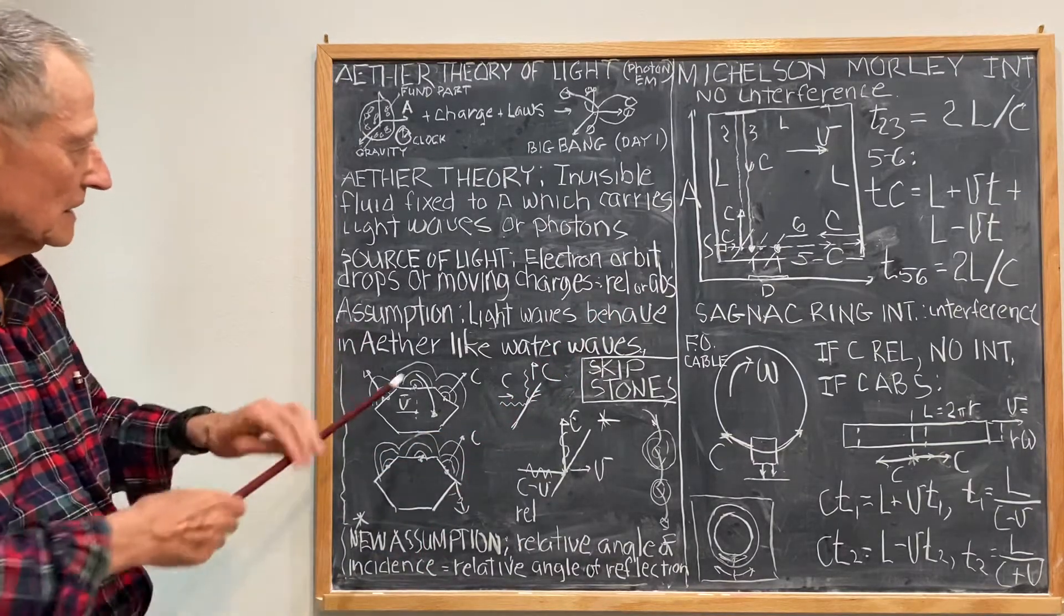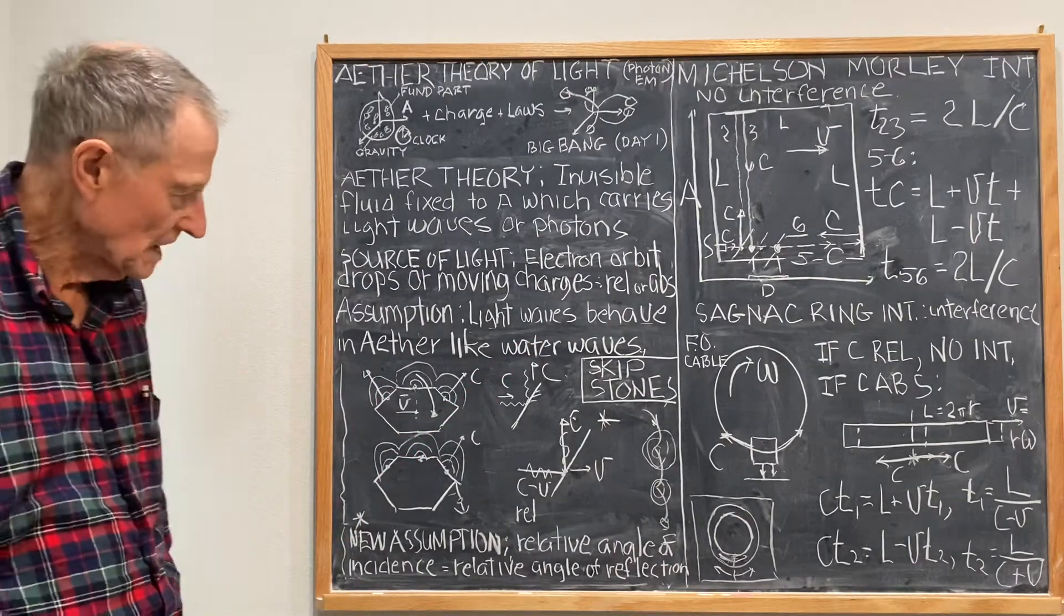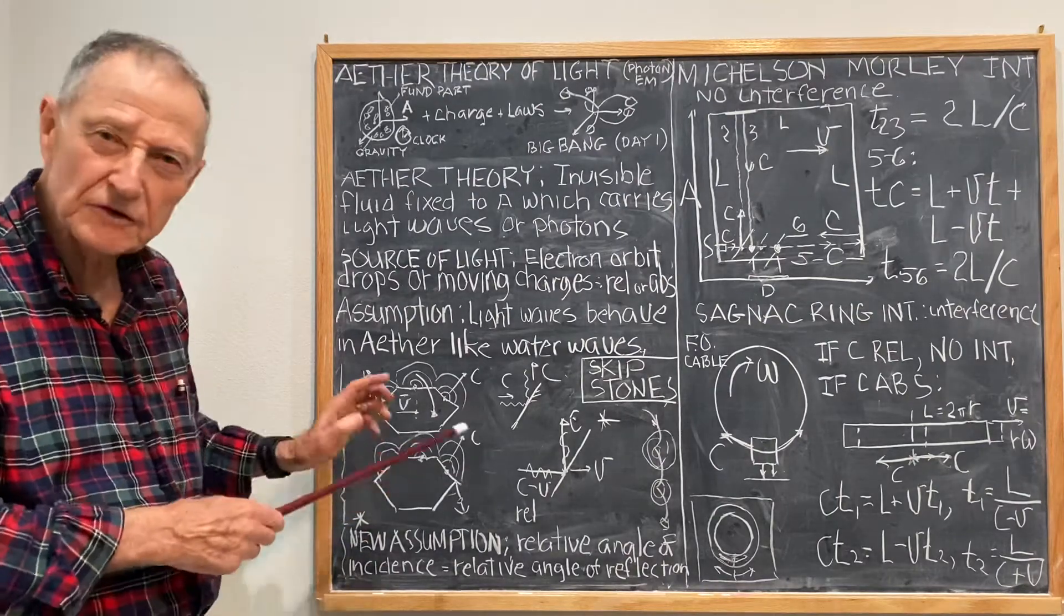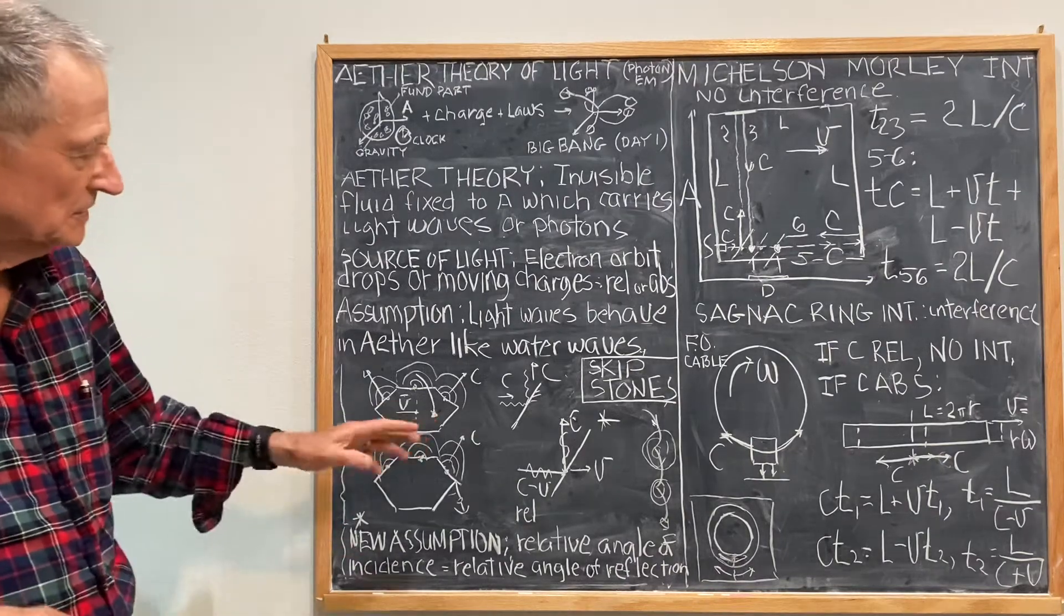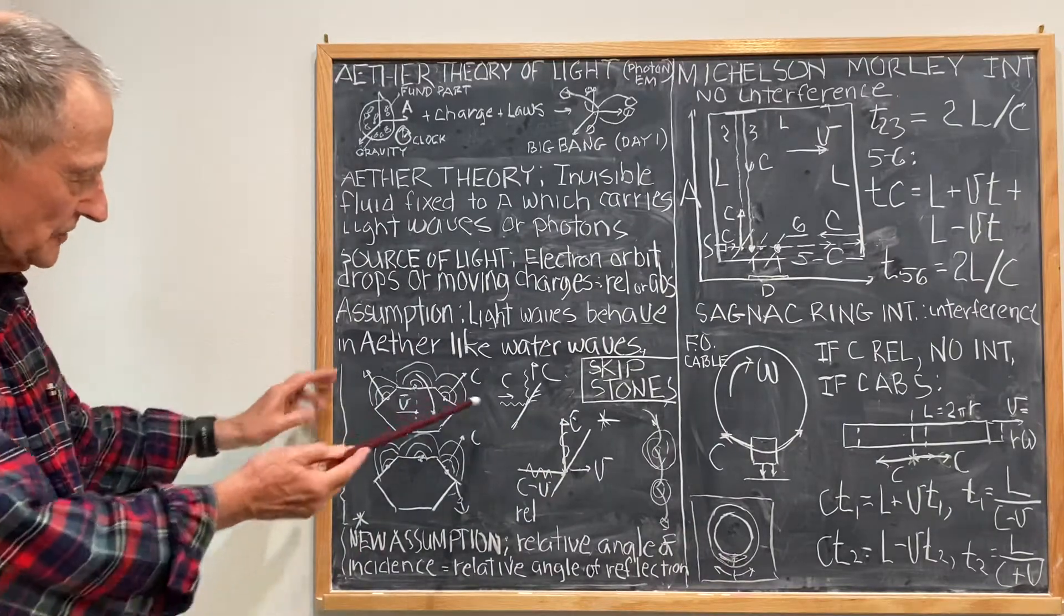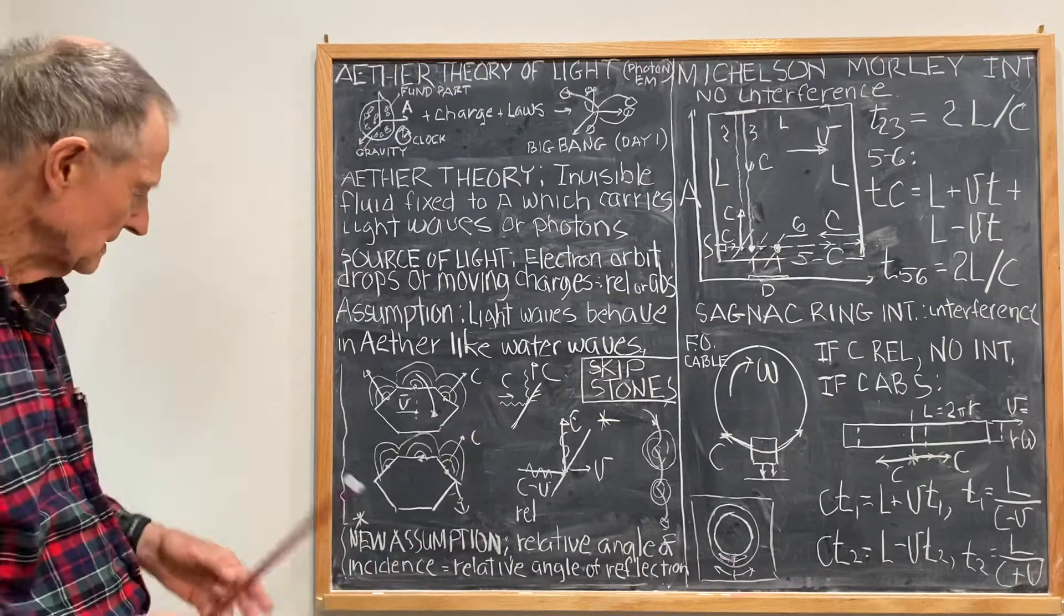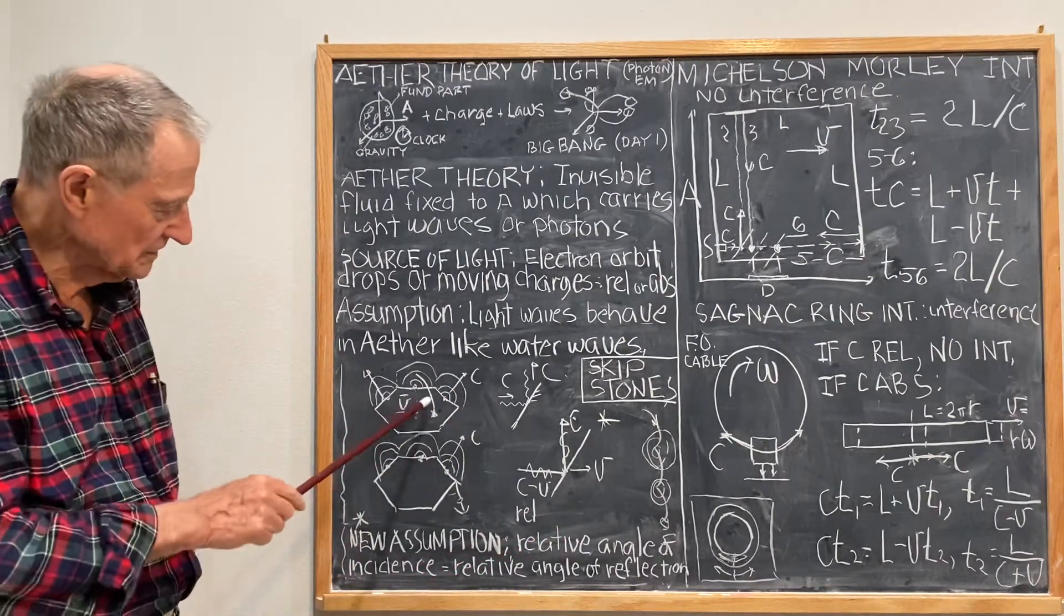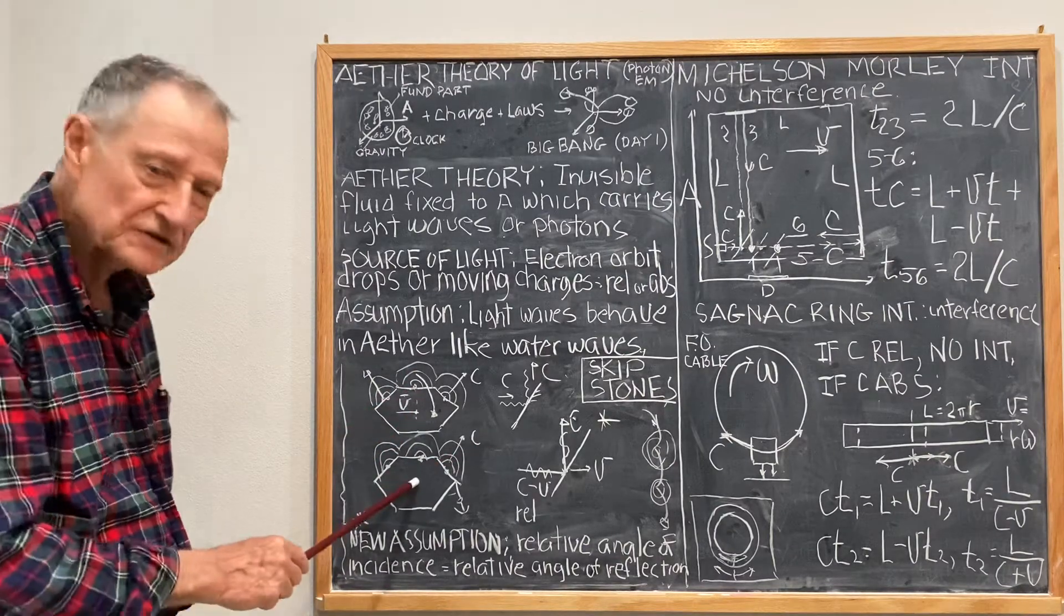I'm going to assume that light waves behave in ether like water waves. I'm just going to say a few words about how water waves act because I'm going to use those principles in the subsequent discussion. If I imagine I have a lake, here's the shore, the shore can be considered the absolute coordinate system. I have two boats, sailboats. One is moving, there's the sail, into the water. And the other is stationary.